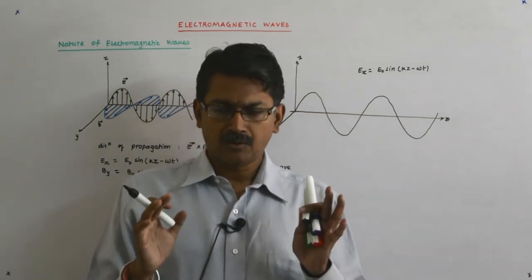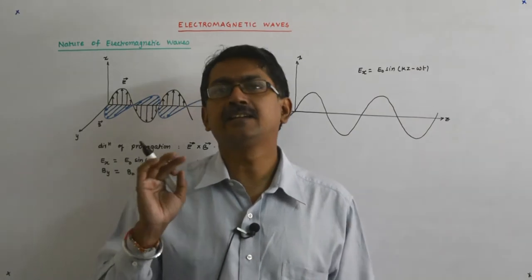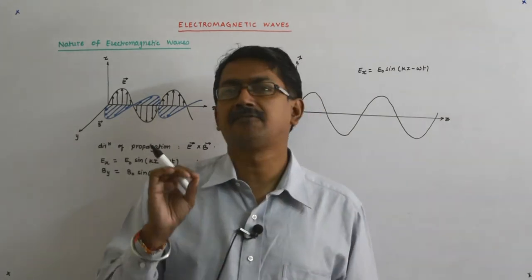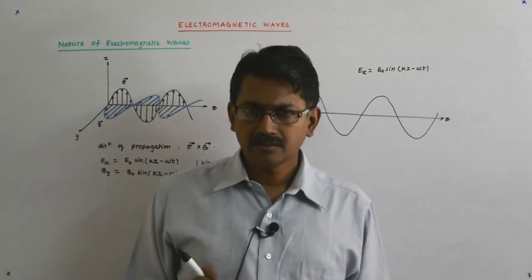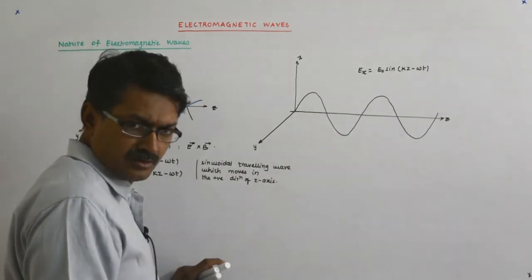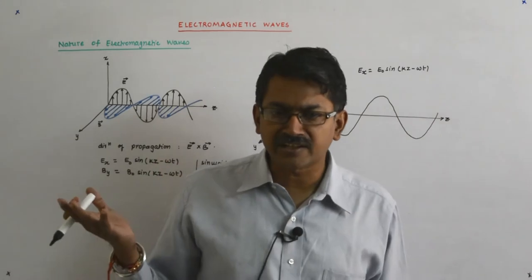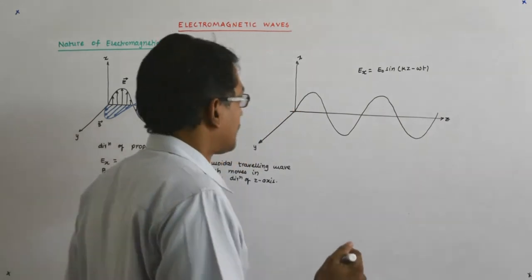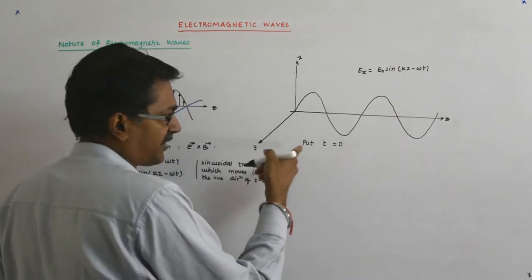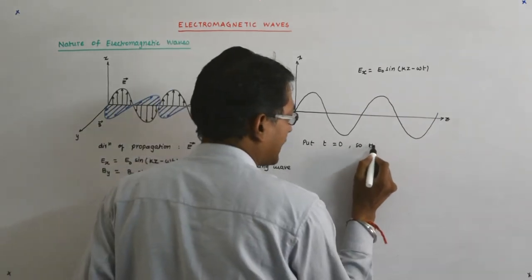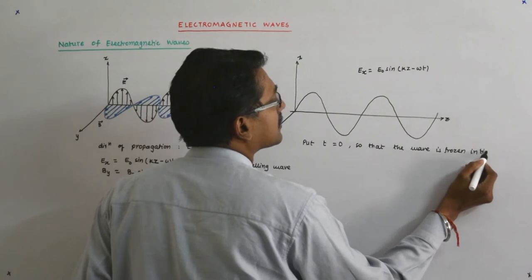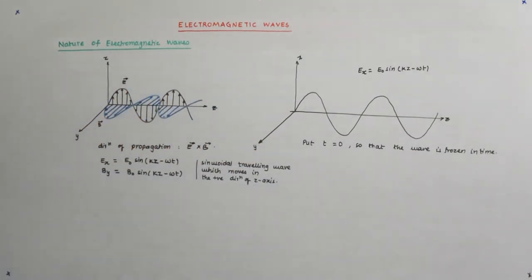Let us say I freeze it at t equal to zero. What do you mean by freezing? Taking a photograph — still photography is freezing in time. So this whole thing is moving, but suddenly you take a photograph, let us say in this very position. So that headache of t changing goes away and let us try to analyze this wave. The wave is frozen in time, we have put t equal to zero.